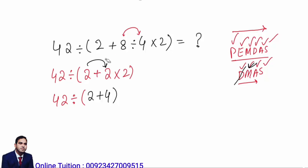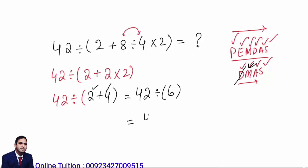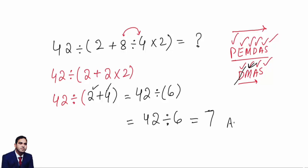Now we have 42 divided by, in bracket, 2 plus 4, which equals 42 divided by 6. That is simple: 42 divided by 6 equals 7, because 6 sevens are 42. This is your exact answer. If you do not follow the rule, your answer will be different.